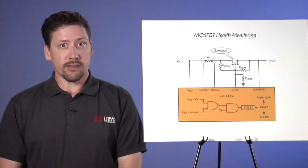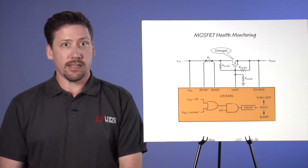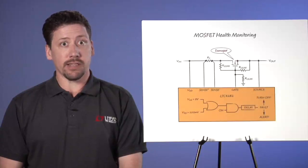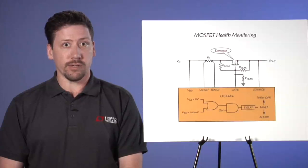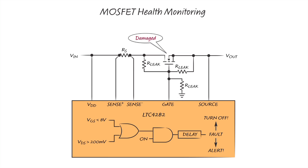Now that we've looked at some ways the LTC4282 can ease high-power designs through applications, let's look at some of the other features that add safety and reliability. Sometimes contamination on the board will load down the MOSFET gate driver, resulting in a low gate-to-source voltage. This results in greater than intended power dissipation in the MOSFET that can cause the MOSFET to fail over time. This is particularly a concern in high-power applications because a gate pin may be connected to several MOSFETs and passive components, the leakages of which all add up.